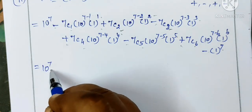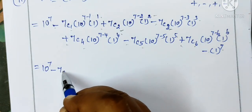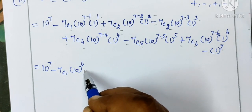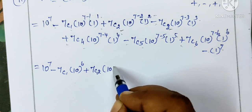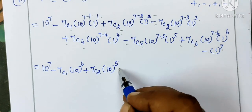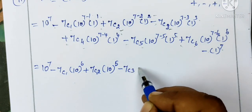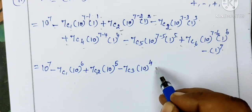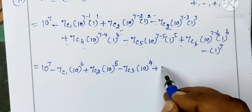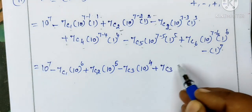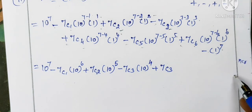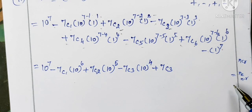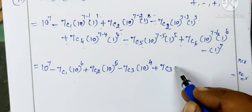So 10 power 7, now expand. First, this is all correct. Then expand: 10 power 6, then 7C2, then 10 power 7 minus 2 is 5. Then 7C3, 10 power 7 minus 3 is 4. Then plus, this is 7C4, which is 7C3. Because we use the formula nCr equals nC(n minus r).